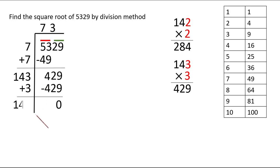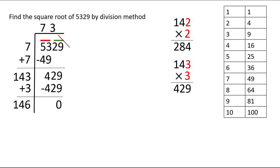Many of you have the question: why does this method work? Why do we add a 7 under the 7? Why do we write 14 a little towards the left and leave space behind it? Why do we get the square root here, and why is 146 double of 73? In this video we are going to try to answer all these questions.